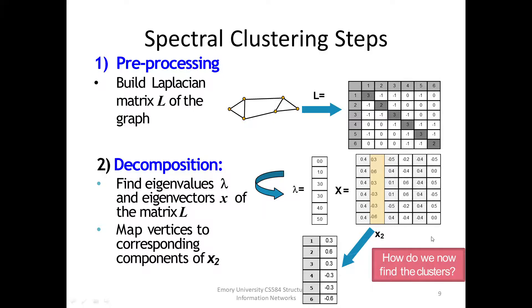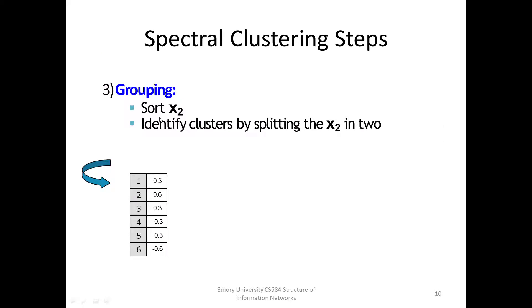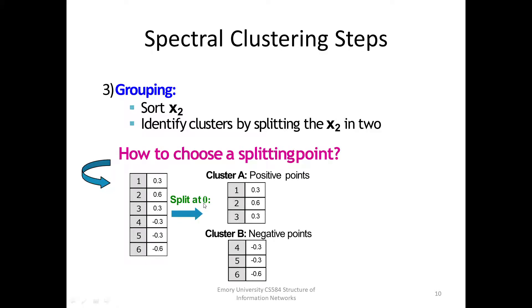Lastly, grouping. Sort components of X2. Identify clusters by splitting the sorted vector X2 into two parts. Here, we use the naive approach. Split at the value 0. Positive points belong to cluster A and negative points belong to cluster B. Great! We separate the two groups.